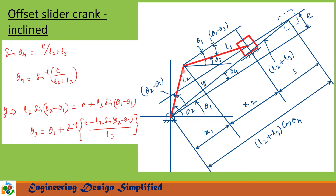The distance from this point to this point is Y. Y can be written as L2 sine(theta 2 minus theta 1), which is also equal to E plus L3 sine(theta 1 minus theta 3). From this equation, we can write theta 3 equal to theta 1 plus sine inverse of (E minus L2 sine(theta 2 minus theta 1)) divided by L3. This is the coupler angle at any given crank angle theta 2, and using this equation we can find theta 3.